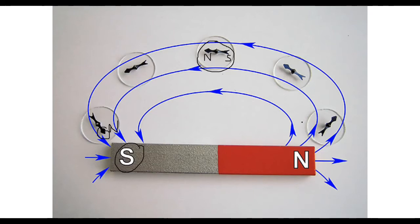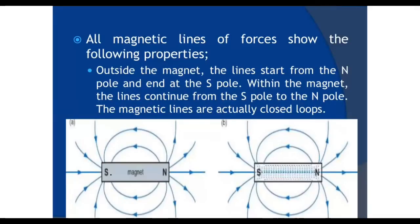The magnetic field lines of a bar magnet move from north to south outside the magnet, but inside the magnet the field lines go from south to north to complete all closed loops. You can plot your magnetic field lines using a compass placed in different positions.